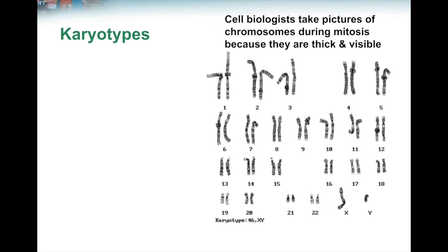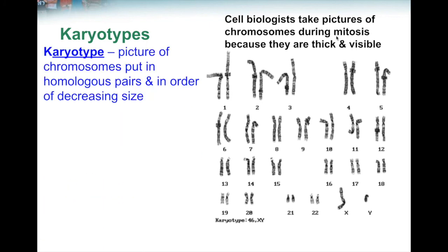So we've seen this before. This is a karyotype — basically a person's chromosomes. What a scientist would do is take a picture of a person's chromosomes while they're dividing during mitosis, then rearrange all the chromosomes so that they are paired up in homologous pairs. To know which chromosomes go together, they make sure the chromosomes are the right size and also that both chromosomes have the lighter and darker banding pieces at the same spots.